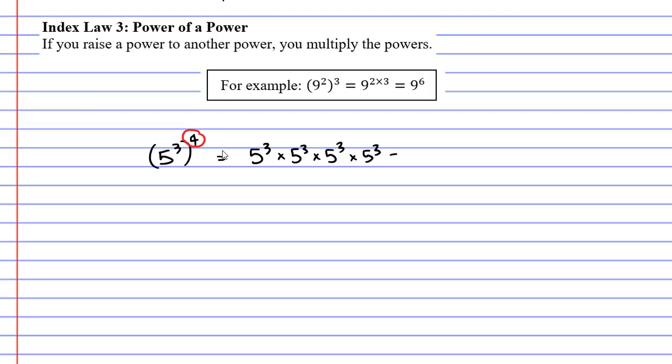Now, if you remember earlier, we stated that if you multiply terms with the same base, which is happening here, they all have the same base of 5, then you can simply add the powers. So, we can go 3 plus 3 plus 3 plus 3, giving us 5 to the power of 12.